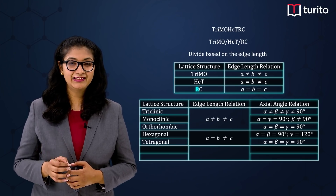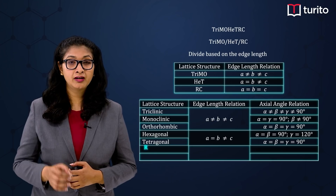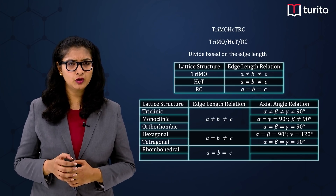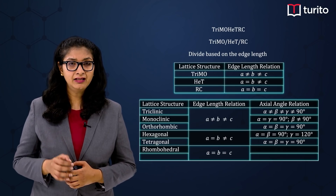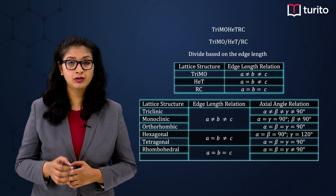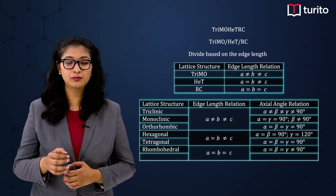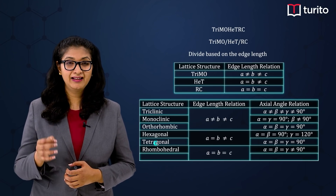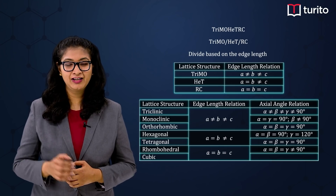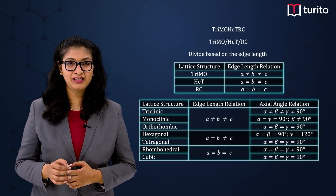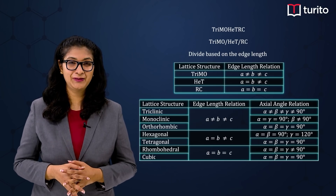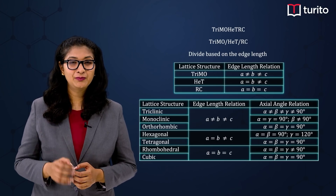Next is Rhombohedral, where alpha is equal to beta, which is equal to gamma, but none are equal to 90°. And the last one is Cubic, which is the most symmetrical, where alpha is equal to beta, which is equal to gamma, all equal to 90°. I hope this will help you out.